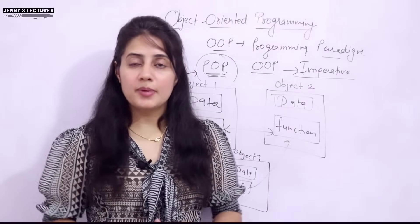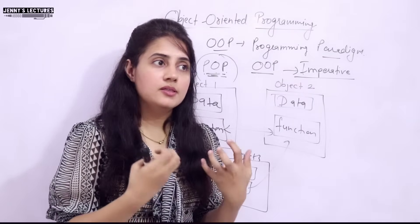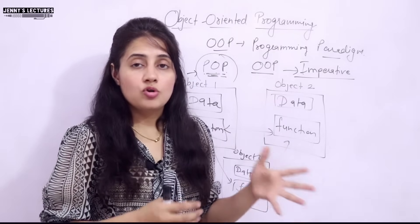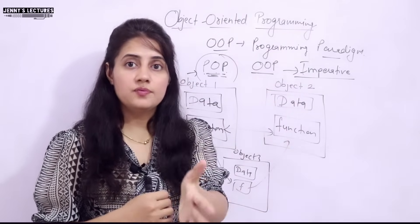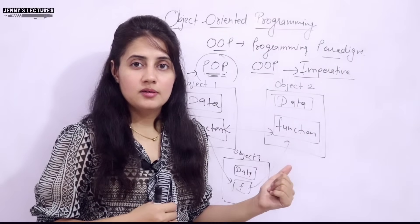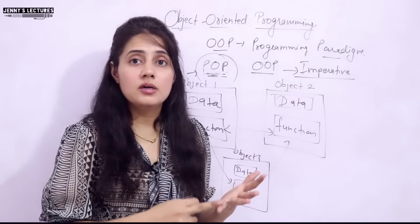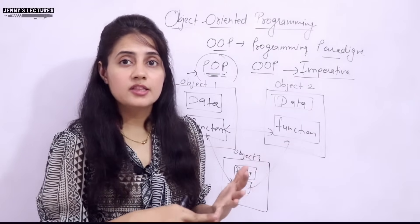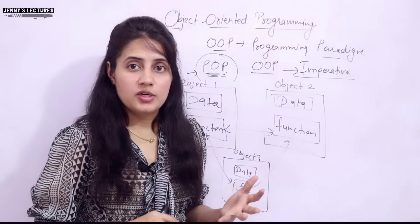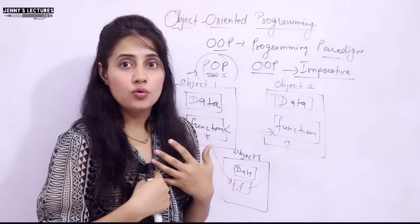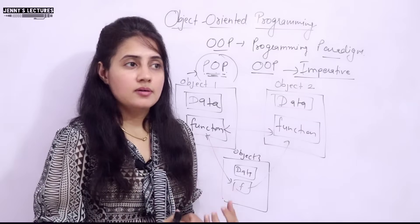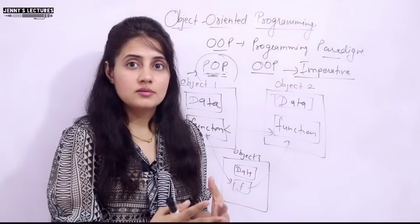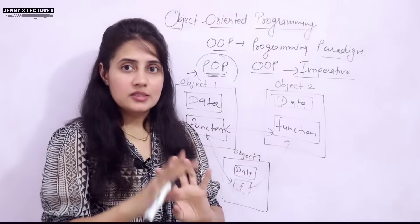Each object has its own data — also called state — and behavior. For example, employee is a class, and objects can be Ram, Sham, Jenny — different instances of that class. Every object has its own attributes like height, color, weight, which we represent as variables. Behavior, like being able to code, sleep, or eat, is represented in the form of functions or methods inside a class. A class is just a blueprint.